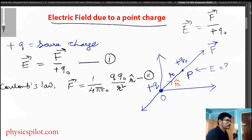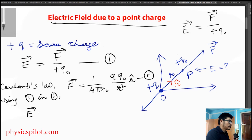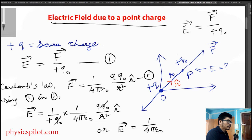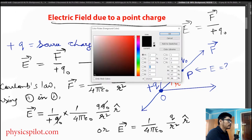So now equation number 2 — how do you do this? Using equation 2 in 1, substituting 1 by plus Q, we can cancel terms. The electric field is equal to 1 by 4 pi epsilon naught, q by r squared, and r-hat. Here is the final theory equation.